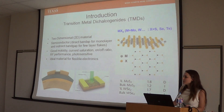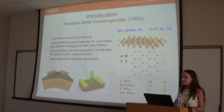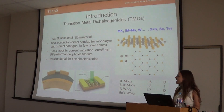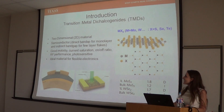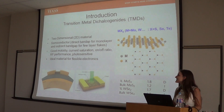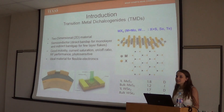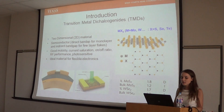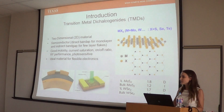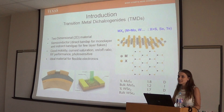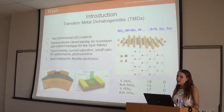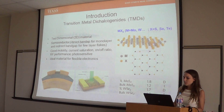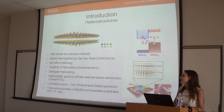We're looking for a material that is able to be flexible enough for that. Silicon's too brittle, so right now we're working on TMDs. They consist of one transitional metal atom and two chalcogen atoms. When they're in monolayer, they're actually semiconductors, which is good for mobility, current saturation, on-off ratio, RF performance — they're photosensitive and really ideal for flexible electronics. However, we don't have the exact properties we're looking for, so we are moving on to heterostructures.